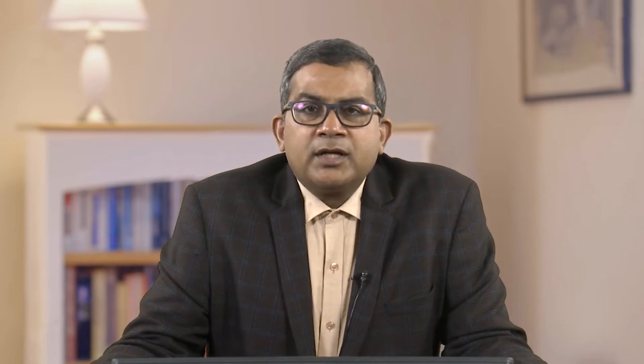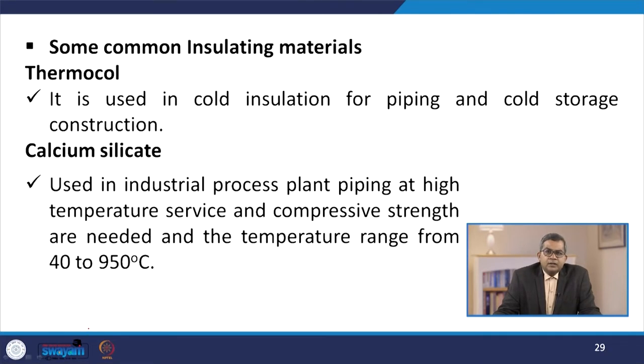Insulating materials can also be classified into organic and inorganic types. Organic insulating materials include hydrocarbon polymers expanded to obtain a high void structure, such as polyurethane foam and thermocool (expanded polystyrene). Inorganic insulation materials are based on siliceous, calcareous, and calcium materials in fibrous, granular, and powder forms, like calcium silicate and mineral wools.